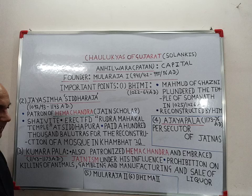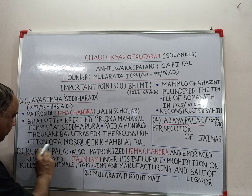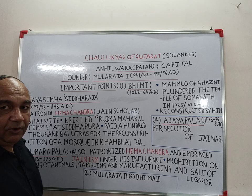Jaisingh Siddharaj paid 100,000 Balut Rajabal coins for the construction of the mosque in Khambat, and this payment was made by him from his personal purse.